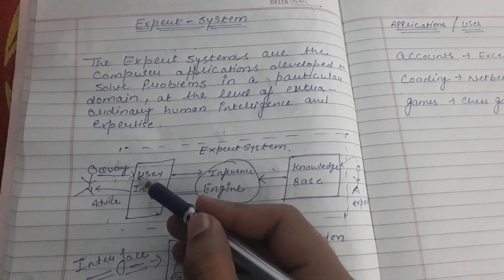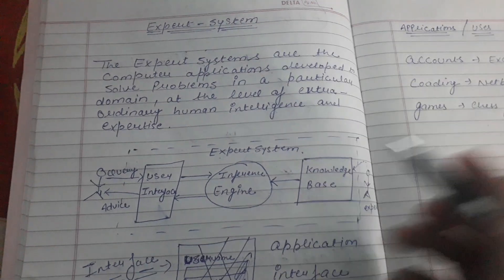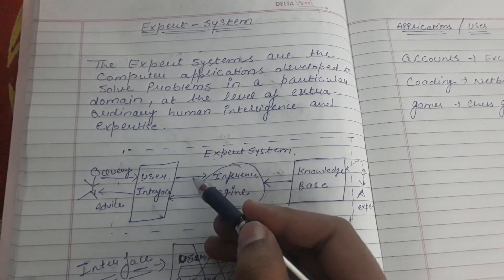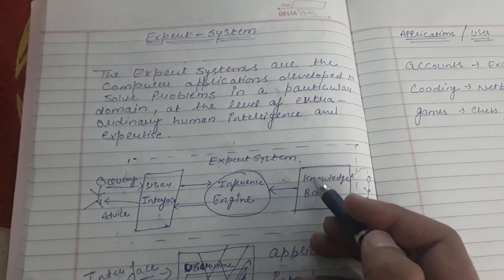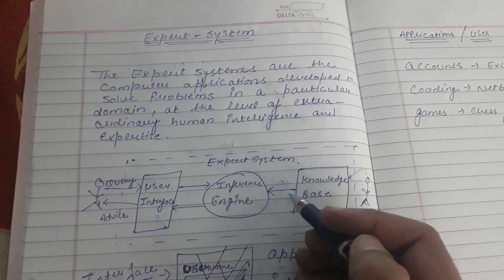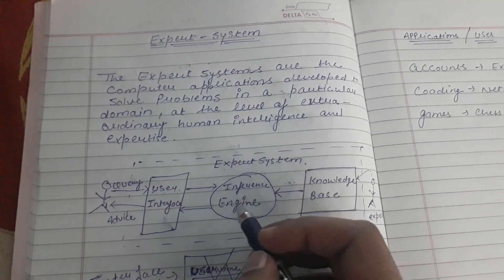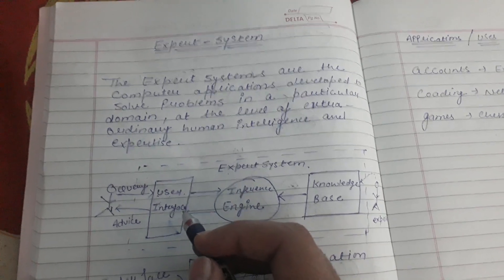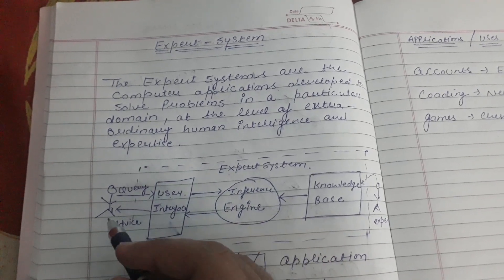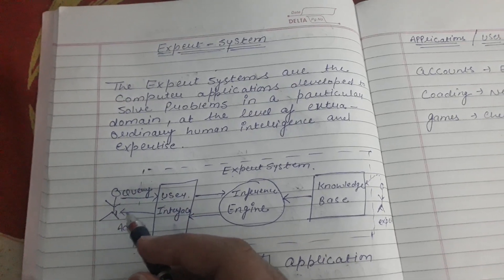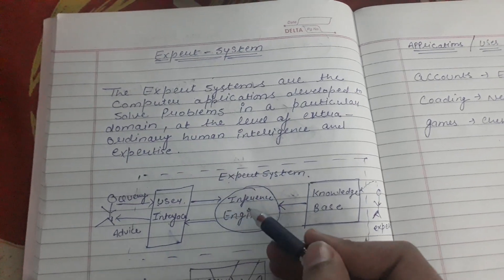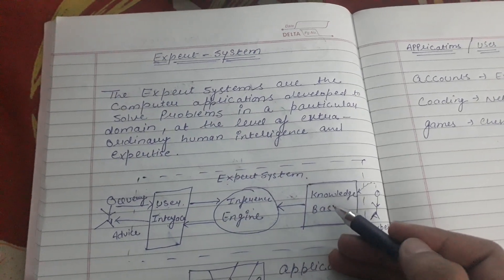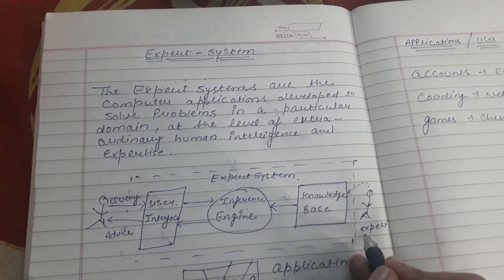Suppose a user puts some query in the user interface. The user interface gives these queries to the inference engine. The inference engine checks these queries in the knowledge base and gives the result back with the solution. This solution is provided to the interface, and the interface takes this solution to the user. So what are the user interface, inference engine, and knowledge base? There is also an expert involved.